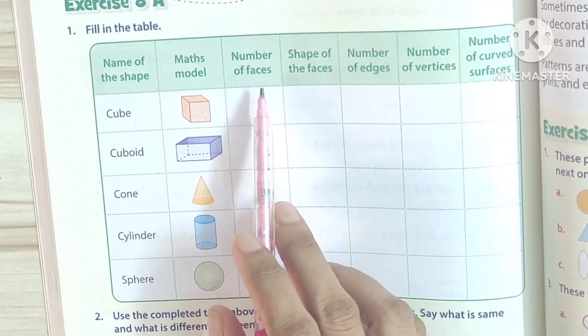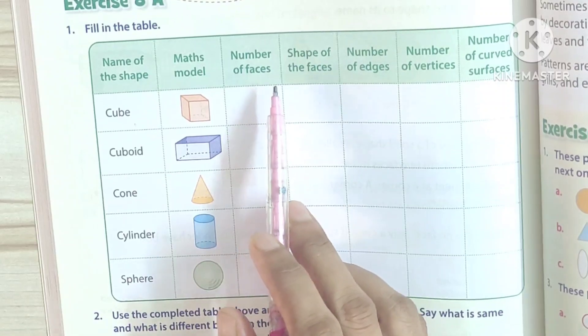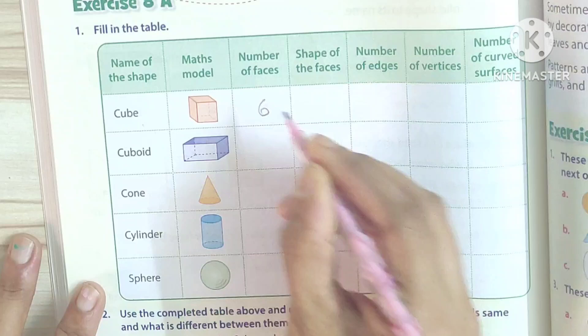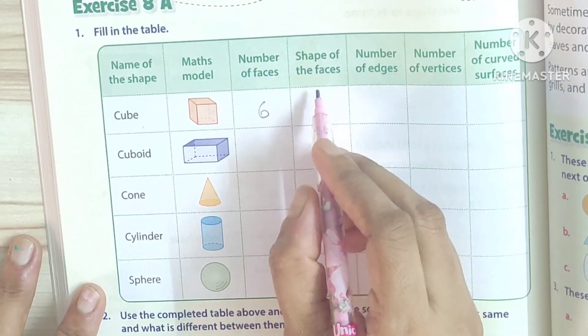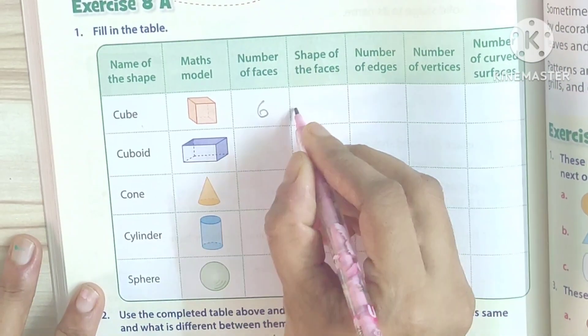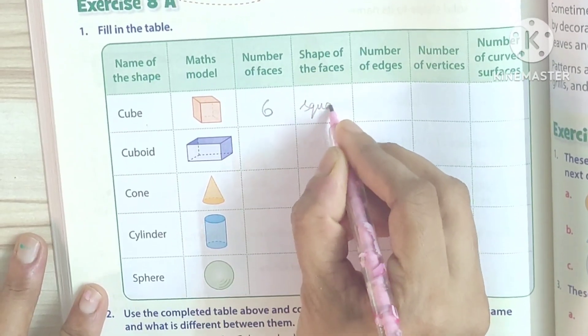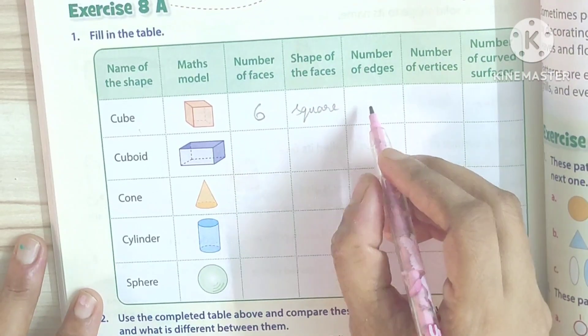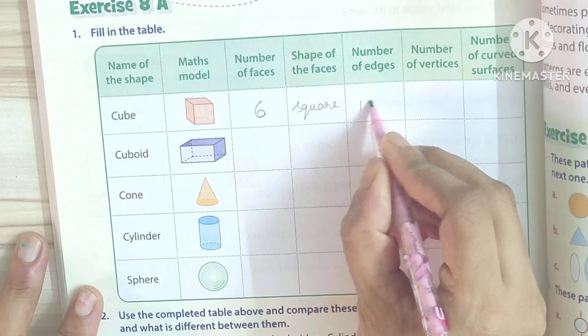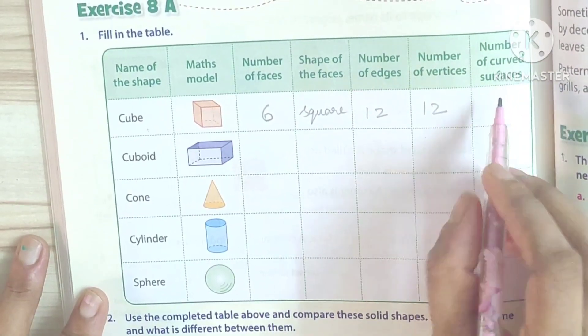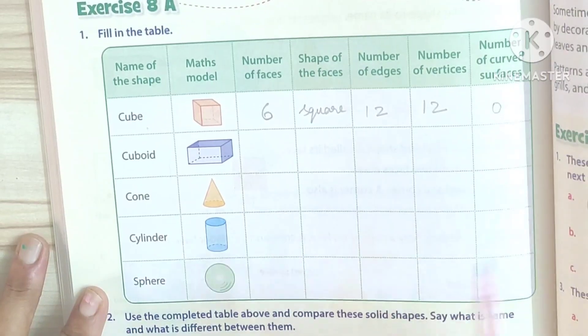Number of faces: In cube we have to write the number of faces - 6. Shape of face: Square. Number of edges: 12. Number of vertices: 12. Number of curved surface: 0.